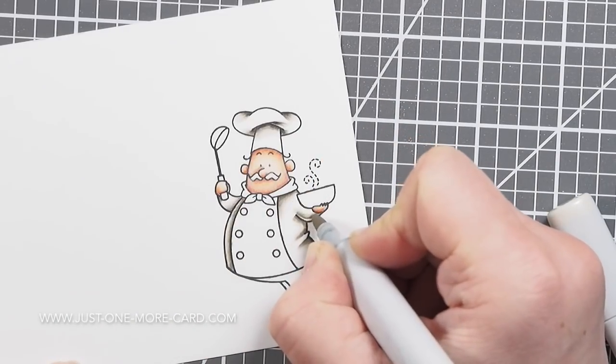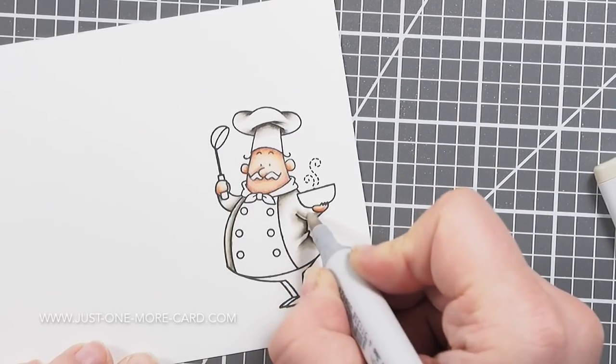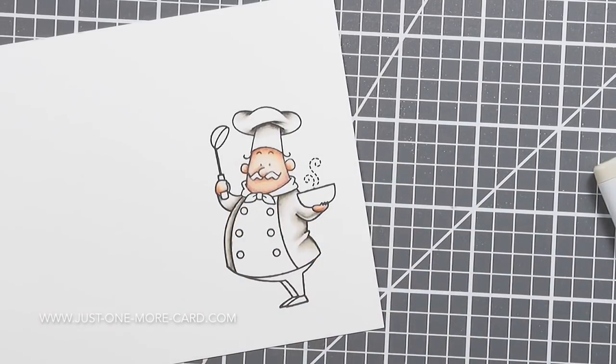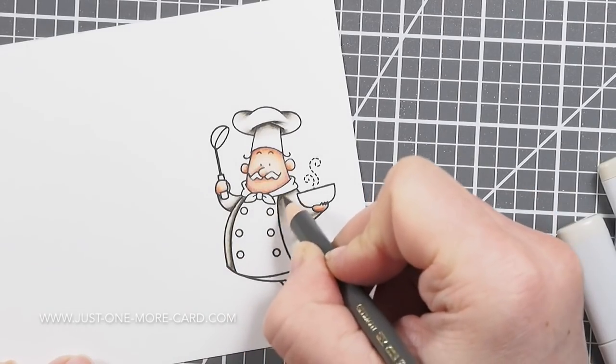It's basically the Copics are your base layer and the pencils are your top layer that just enhances what you've been doing. So you can see that here as well.